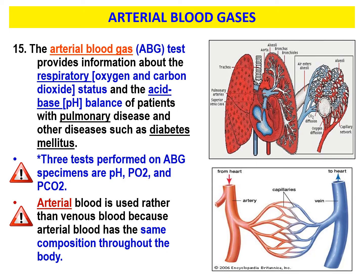Now let's talk about arterial blood gases — ABGs. This test provides information about the respiratory status of a patient — oxygen and carbon dioxide levels and the acid-base or pH balance. We're usually talking about patients with pulmonary disease or other injuries and diseases, which can also be associated with conditions like diabetes mellitus. The three tests performed on an ABG specimen are pH, PO2, and PCO2. Arterial blood is used rather than venous blood because arterial blood has the same composition throughout the body.